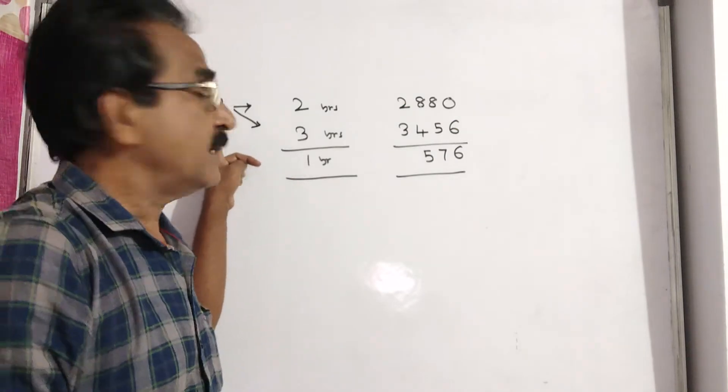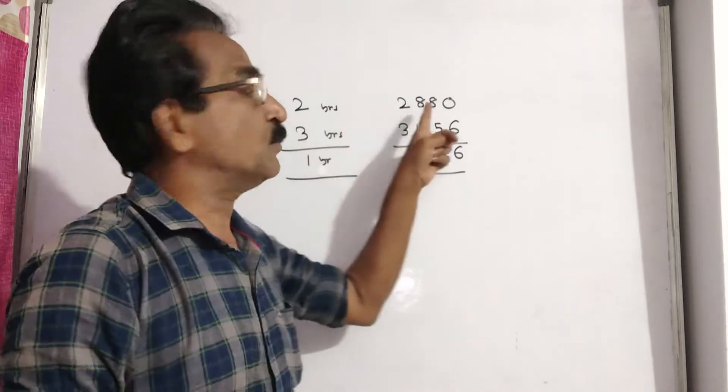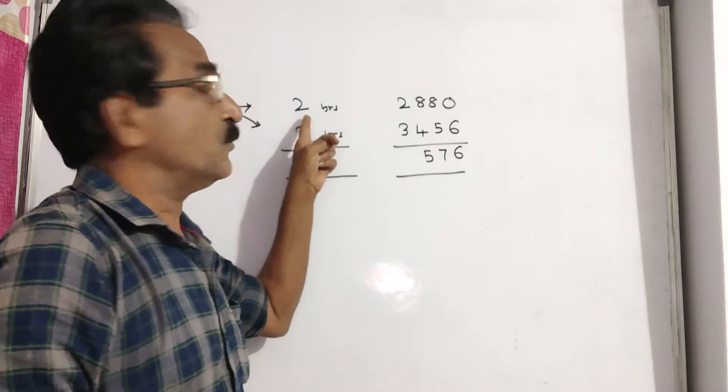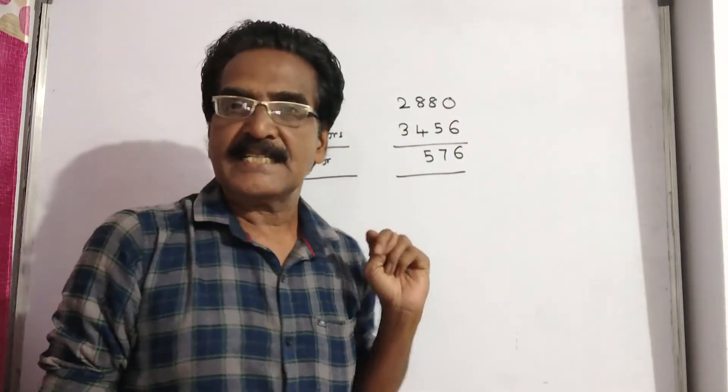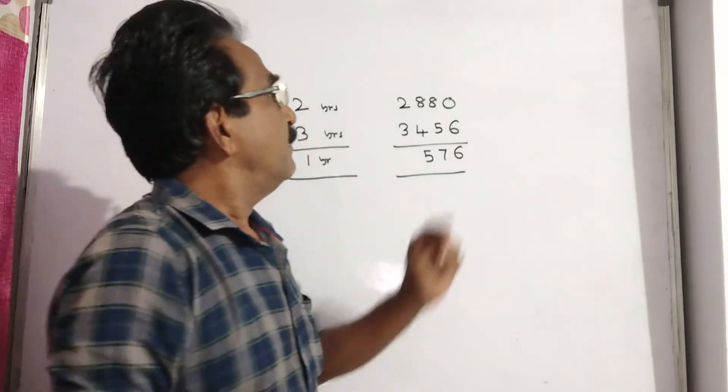See friends, a certain sum P amounts to 2880 in 2 years and 3456 in 3 years. Find the sum, find the sum P.